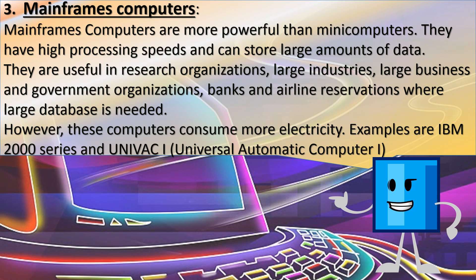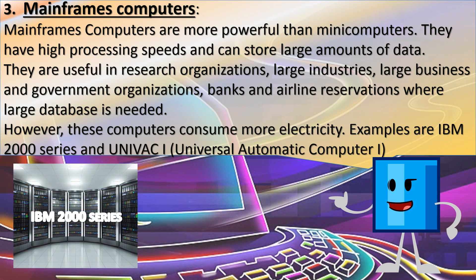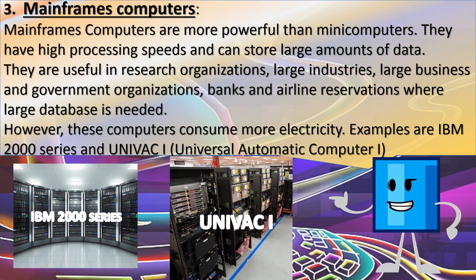3. Mainframe Computers. Mainframe computers are more powerful than mini computers. They have high processing speeds and can store a large amount of data. They are useful in research organizations, large industries, large businesses, government organizations, banks, and airline reservations where a large database is needed. However, these computers consume more electricity. Examples are IBM 2000 Series and UNIVAC (Universal Automatic Computer).